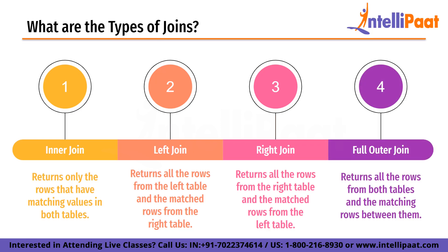Finally we have full outer join. Full outer join returns all the rows from both tables and the matching rows between them. If there are no matching rows, then null values are returned for the respective columns. It is useful when you want to include all the data from both tables.